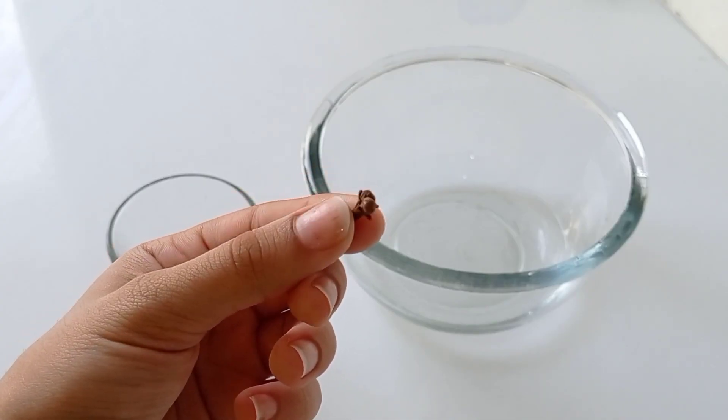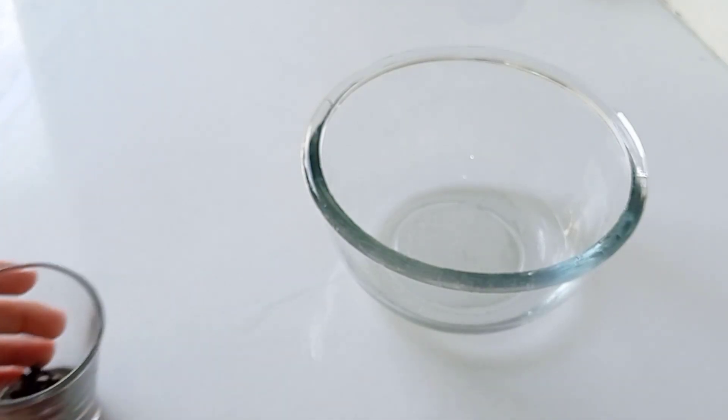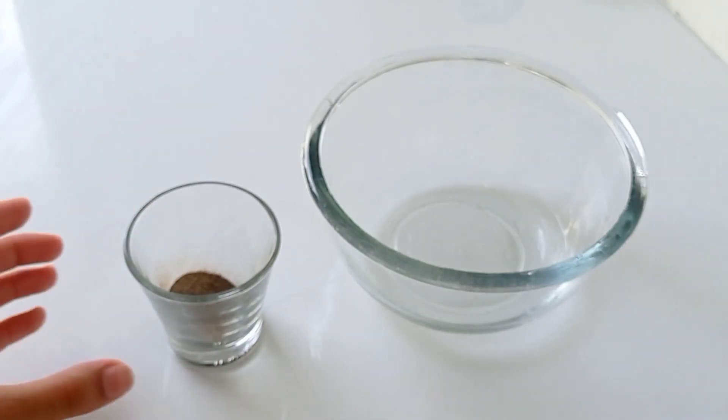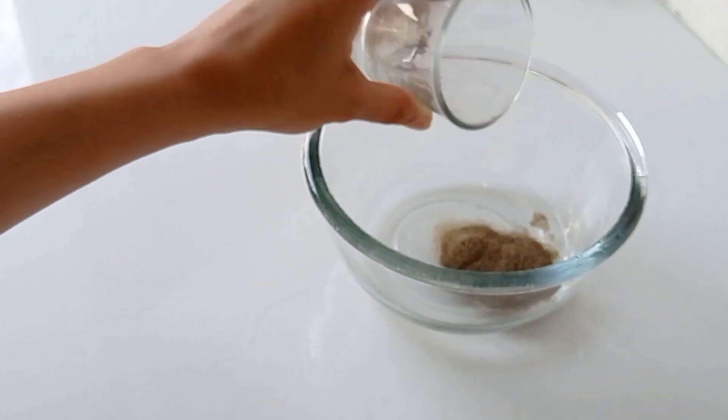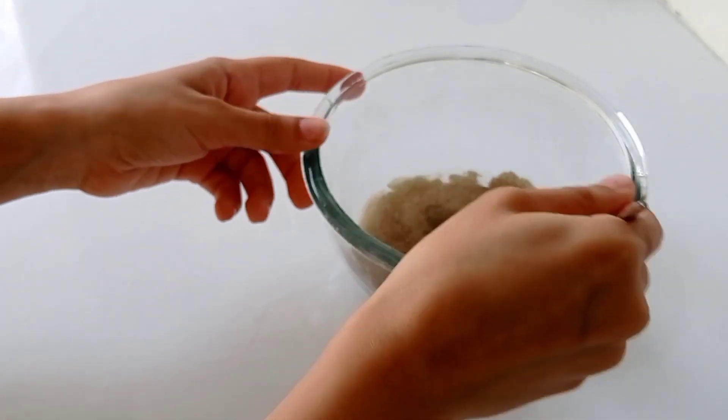Grind the cloves in a coffee grinder and then add it to vinegar and let it sit for 10 to 15 minutes.